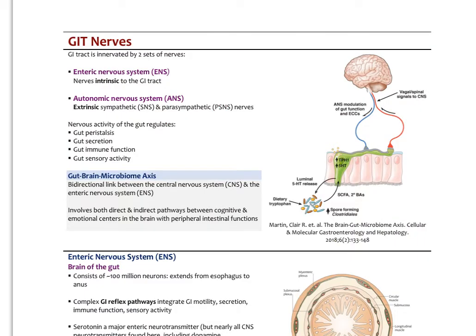The GI tract has two sets of nerves: intrinsic nerves — the enteric nervous system — and extrinsic nerves — the sympathetic and parasympathetic autonomic system. Nerve activity regulates peristalsis, secretion, gut immune activity, and sensory activity. Increasingly we find communication between the gut and brain — the gut-brain-microbiome axis — where bacteria secrete signals sensed by the gut wall, relayed through the submucosal and myenteric plexuses, and carried to the brain via the vagus nerve, with information flowing back to regulate gut activity.